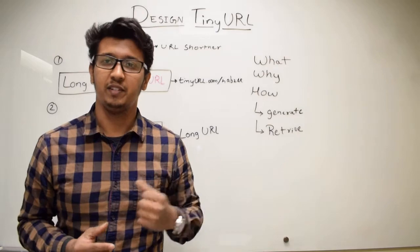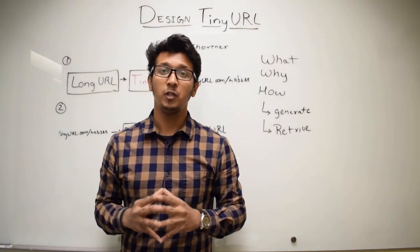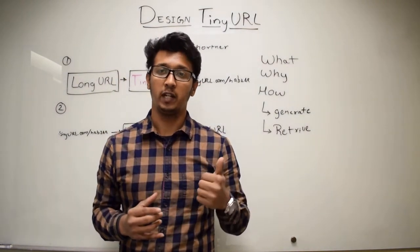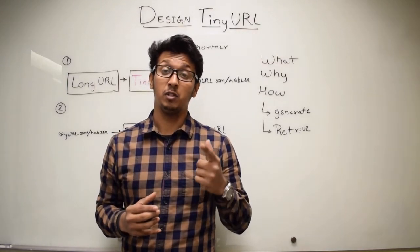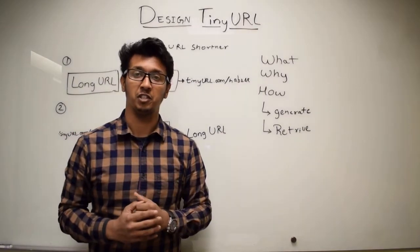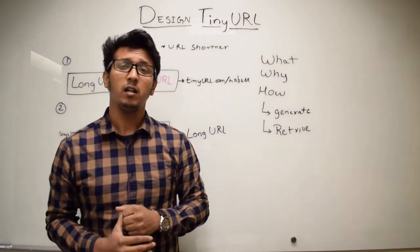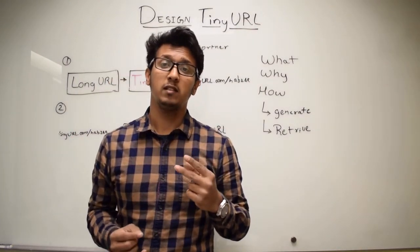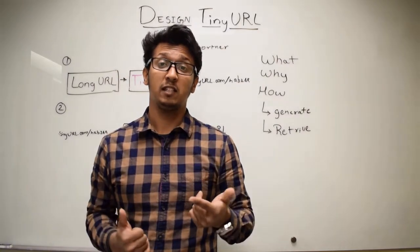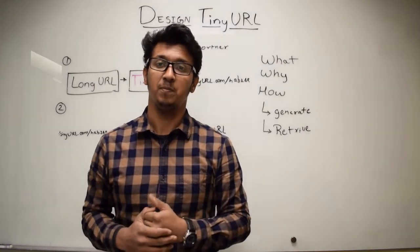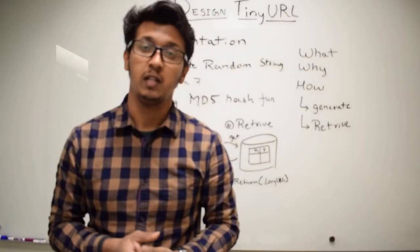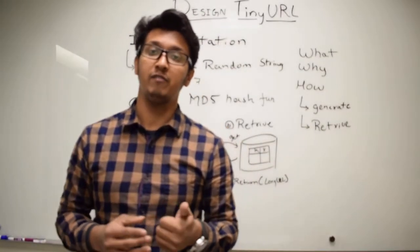Now we know about TinyURL and its working, so let's get into the implementation. How can we implement the generate and retrieve functions? There are basically two methods: one is random generation, and one using a checksum — that is MD5 hash generation. Let's get started with the random generation function.